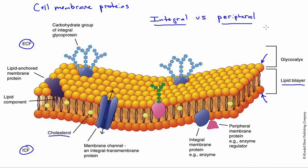Peripheral proteins are associated intermittently with the membrane. Down here at the bottom, we have a peripheral membrane protein — an enzyme regulator — that has come to activate, through association, this integral membrane protein, which is an enzyme.